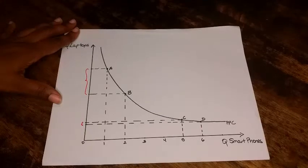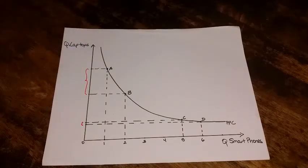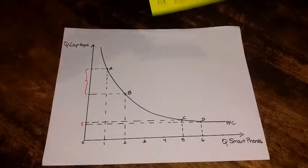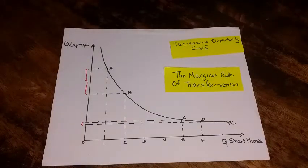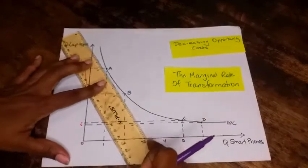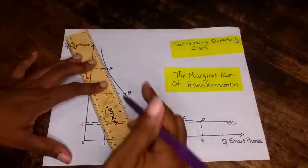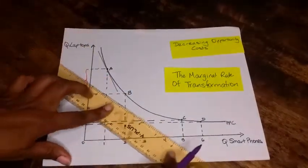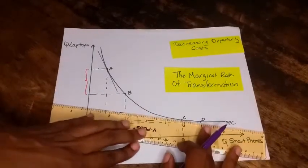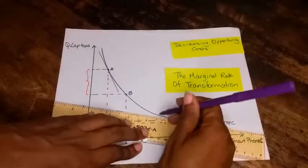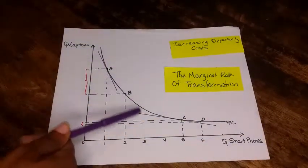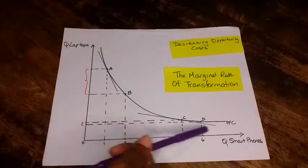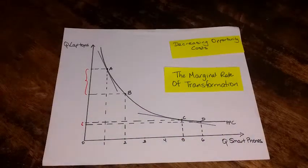Notice, if you remember the marginal rate of transformation mentioned in previous videos, if we look at the gradients of the points along the curve, you'll find that the gradients are decreasing. For example, let me draw a few. Remember, to get the gradient you have to hold the ruler tangential to the line at the point. Notice the gradient decreases until it's almost flat as we increase the quantity of smartphones being produced.